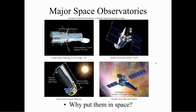Here are some of the major space observatories. The Hubble — to me, the Hubble is the greatest telescope ever. It's about the size of a school bus, floating around out there orbiting the Earth and getting great pictures. There's also the Extreme Ultraviolet Explorer, the Spitzer infrared telescope, and the Chandra X-ray telescope. Why do we put them in space? Simple — to cut down on the filtration from the atmosphere.